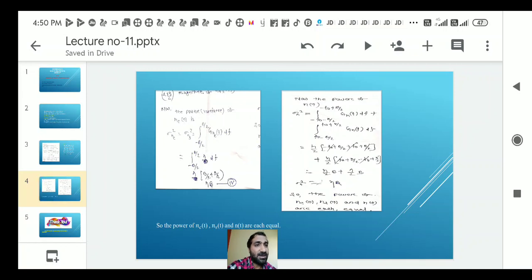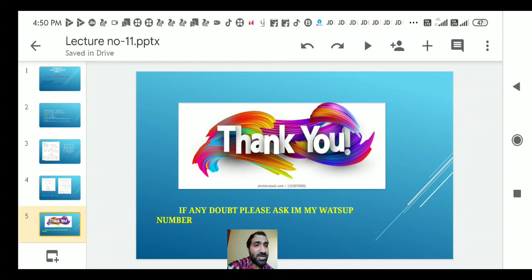Now the power of nt is the sum of nc and ns. We integrate gn(f) df over the spectral ranges minus f naught minus b by 2 to minus f naught plus b by 2, and f naught minus b by 2 to f naught plus b by 2. After substituting values, we get eta b. So the power of nc, power of ns, and power of nt are all equal.